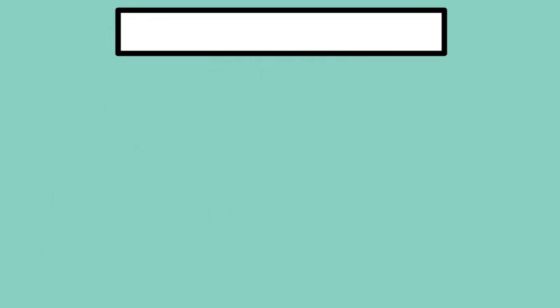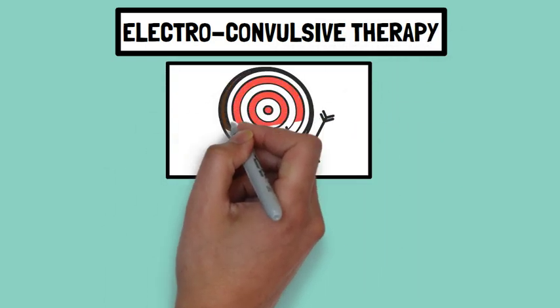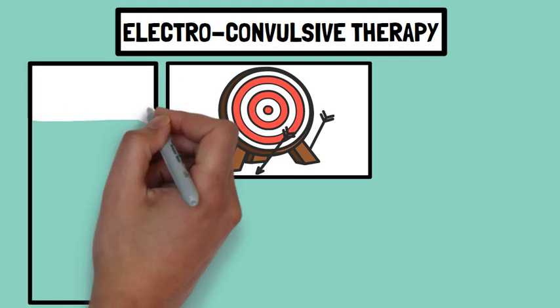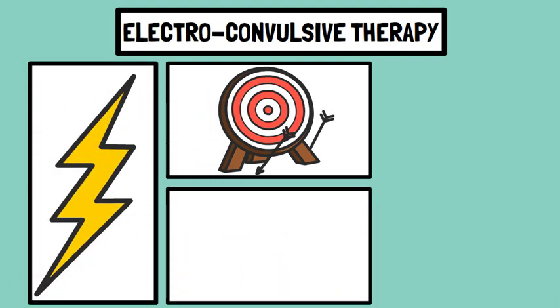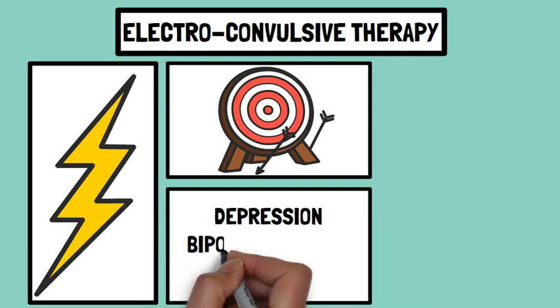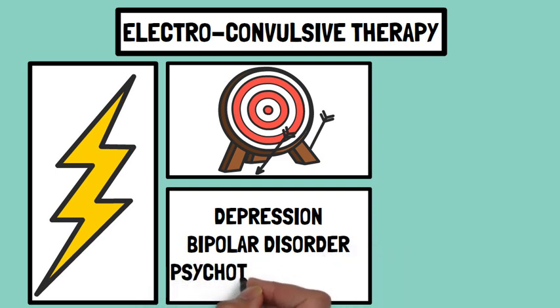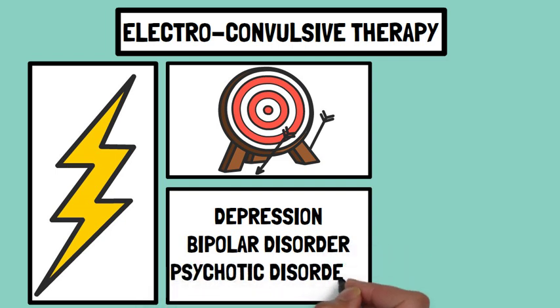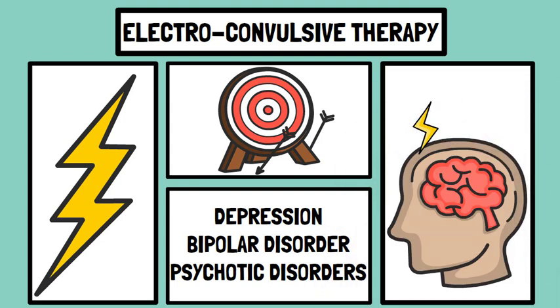In cases where pharmacotherapy proves ineffective or insufficient, alternative interventions such as electroconvulsive therapy or ECT may be considered. Despite its controversial reputation, ECT has emerged as a viable treatment option for severe depression, bipolar disorder, and certain psychotic disorders. By administering controlled electrical currents to the brain, ECT induces brief seizures which are believed to alleviate symptoms by modifying neurotransmitter activity and enhancing neuroplasticity.